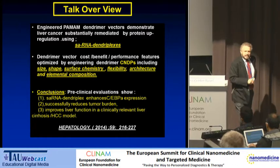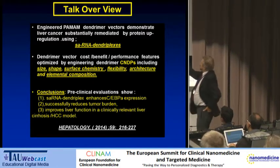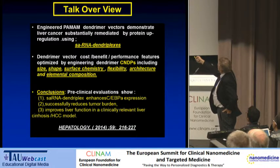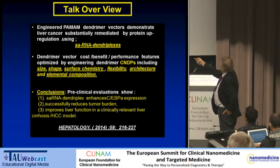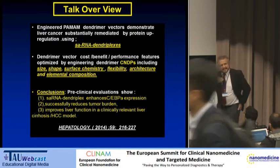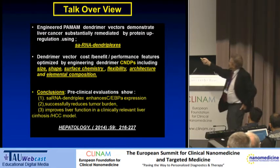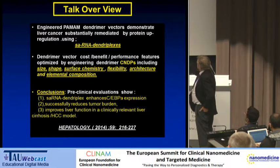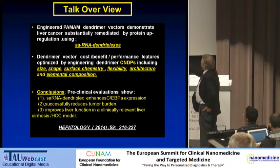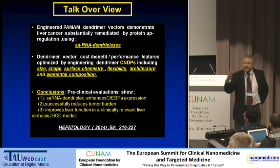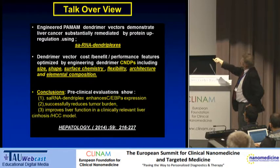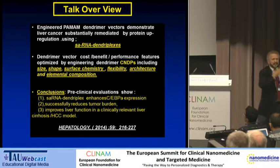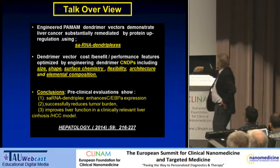The practical part of this talk is about how we engineered PAMAM-dendrimer vectors and showed that we could treat liver cancer and remediate it by up-regulating proteins using an saRNA — not siRNA, but a small activating RNA sequence — with our PAMAM-dendrimers to make so-called dendroplexes. We showed that by engineering these critical nanoscale design parameters, we could really optimize cost, benefits, and performance features by simply engineering those six critical nanoscale design parameters.